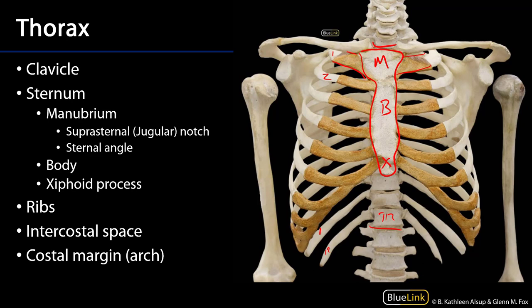The superior portion of the manubrium has a concavity. This is called the suprasternal notch, also known as the jugular notch, and that's a palpable landmark that is useful for helping to measure out the cervical region.